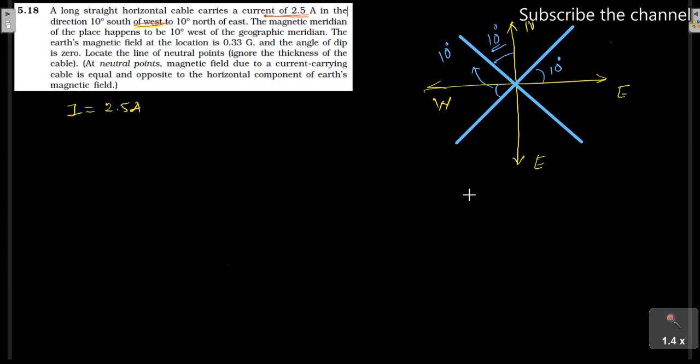Then you have said that the earth's magnetic field at the location is 0.33. BE is equal to 0.33 Gauss. Next, you have said that the angle of dip is 0.